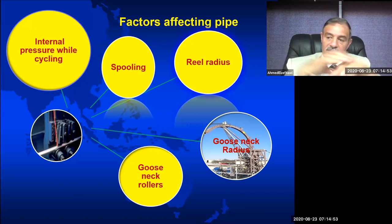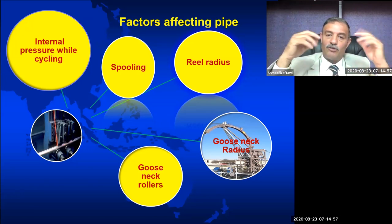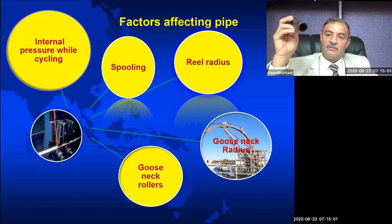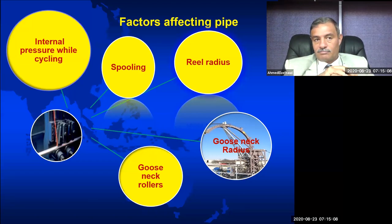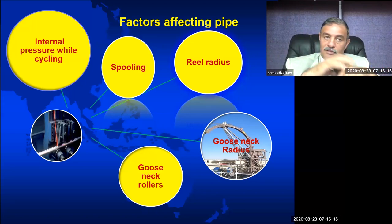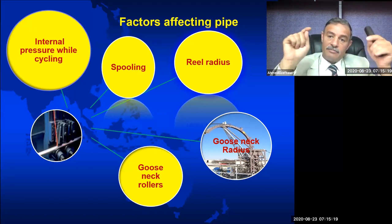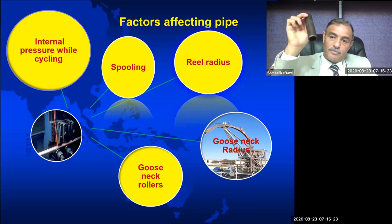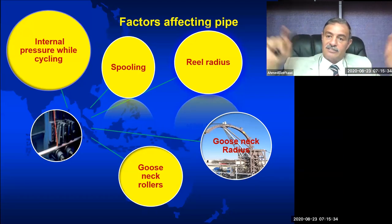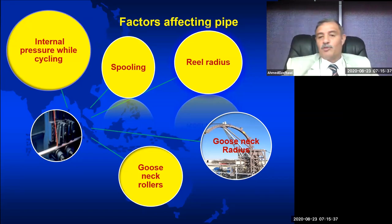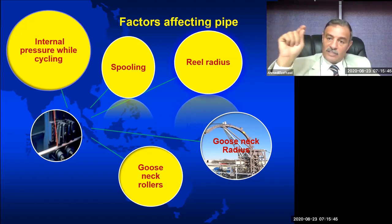The reel radius — the reel radius where you store this pipe. If you have a pipe with an OD of one and a quarter inch and you spool it on a drum 60 inches in diameter, can you use the same drum diameter for a pipe that is larger? Of course not. When you increase the diameter of the pipe, you need to increase the radius of the drum to reduce the bending stress. So reel radius is a factor that affects pipe life.